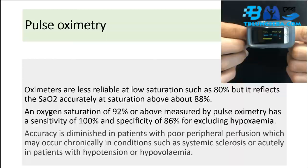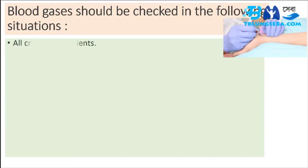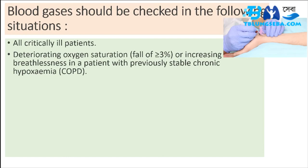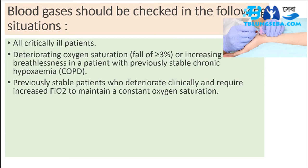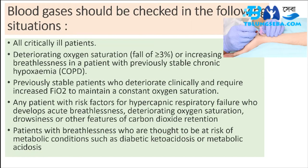Blood gases should be checked in the following situations: all critically ill patients; deteriorating oxygen saturation (fall ≥3%) or increasing breathlessness in a patient with previously stable chronic hypoxemia; previously stable patients who deteriorate clinically and require increased FiO2 to maintain constant oxygen saturation; any patient with risk factors for hypercapnic respiratory failure who develops acute breathlessness, deteriorating oxygen saturation, drowsiness, or other features of CO2 retention; and patients with breathlessness thought to be at risk of metabolic conditions such as diabetic ketoacidosis or metabolic acidosis.